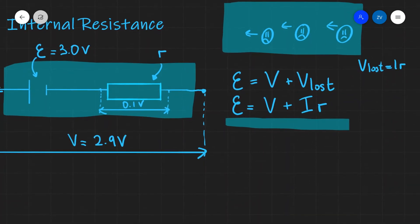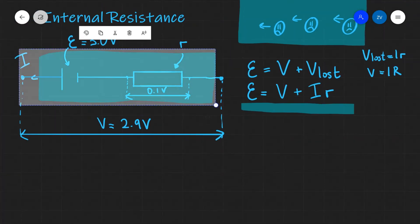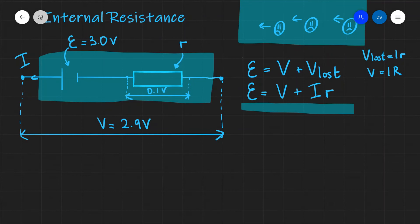We can take this a step further by saying that the terminal PD V equals I times R, where R is the resistance in the circuit. For instance, if I had this circuit over here and I connected it to some total resistance R, I can draw this around the side.